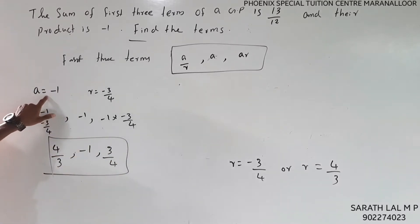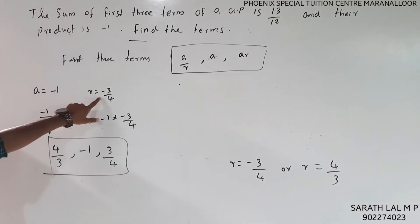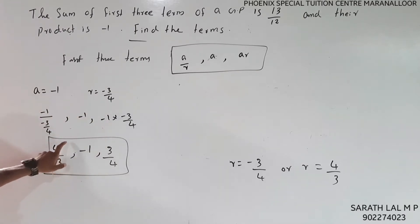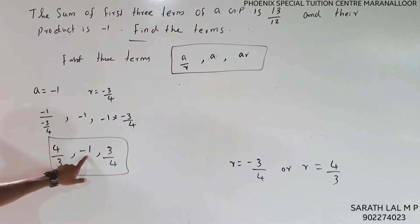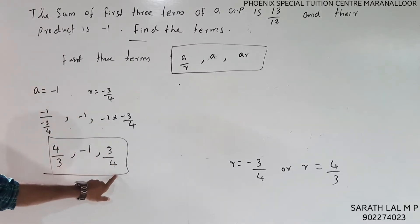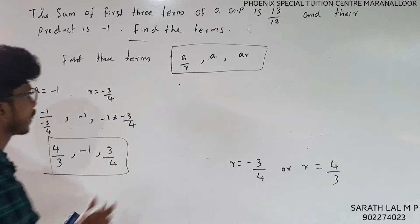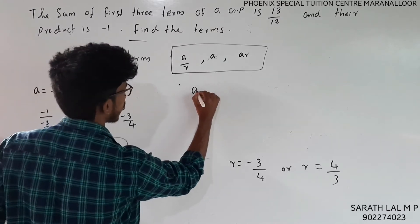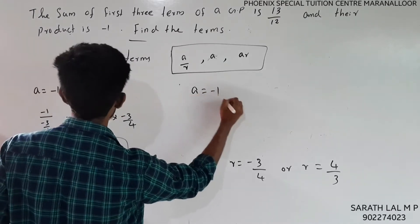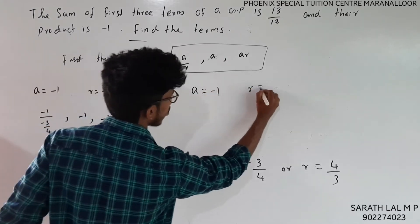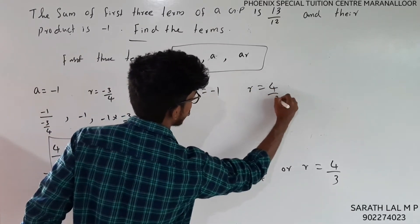Now for the second case: a equals minus 1 and r equals 4 by 3. The first three terms become: a/r is minus 1 divided by 4 by 3 equals minus 3 by 4. Then a equals minus 1, and ar equals minus 1 times 4 by 3 equals minus 4 by 3.